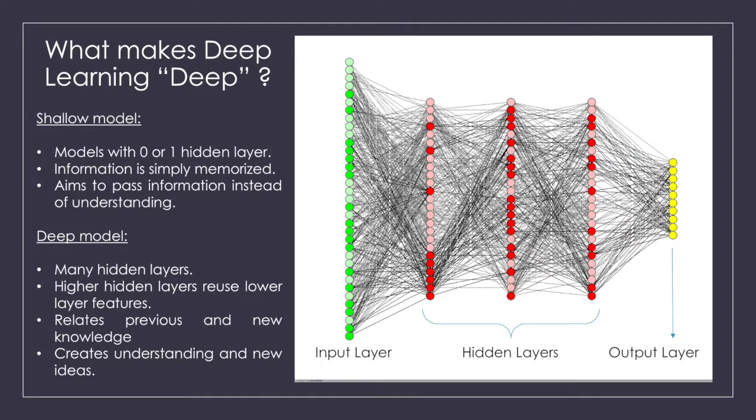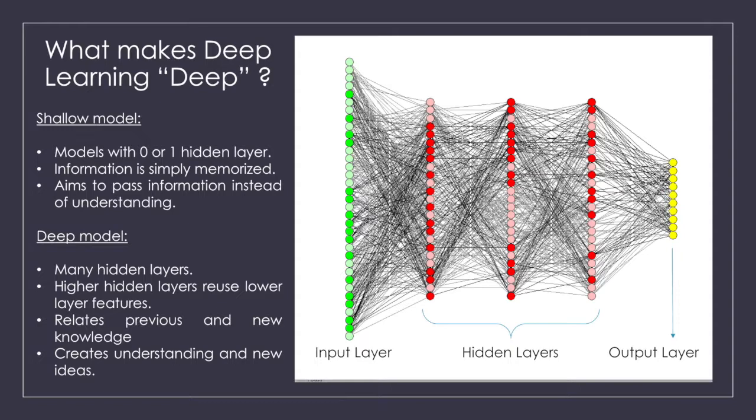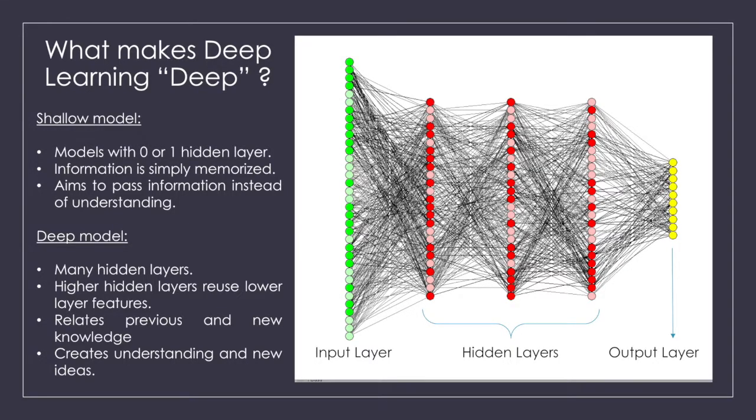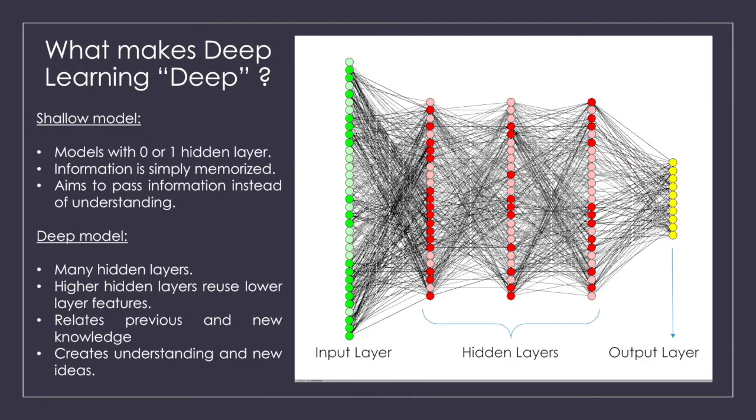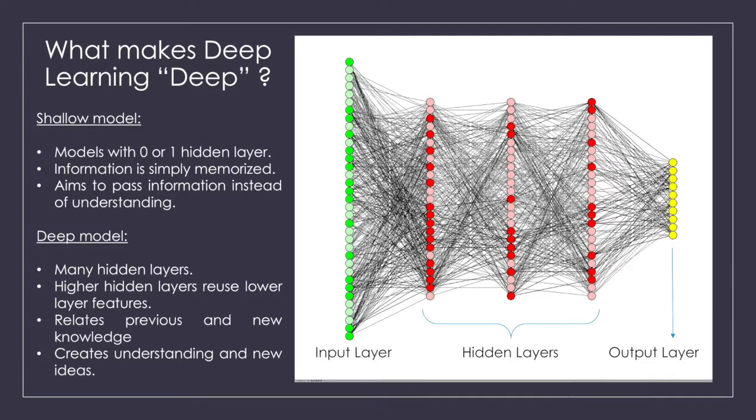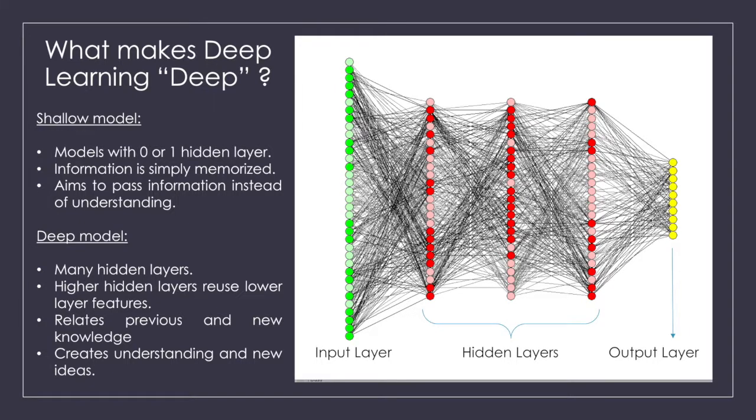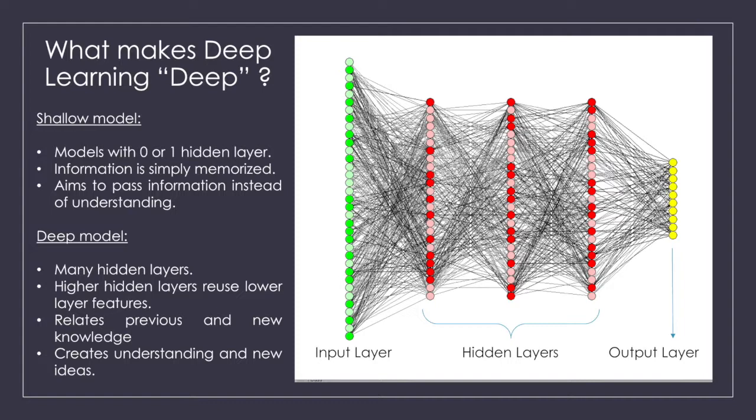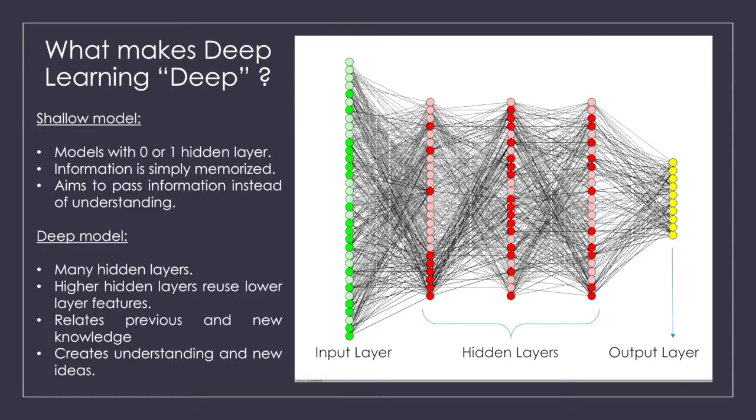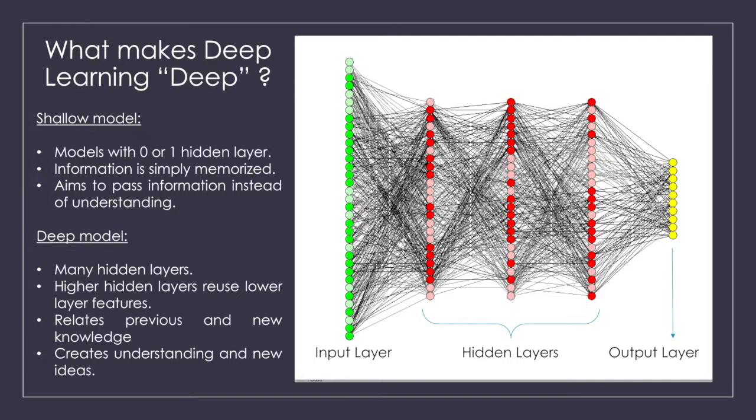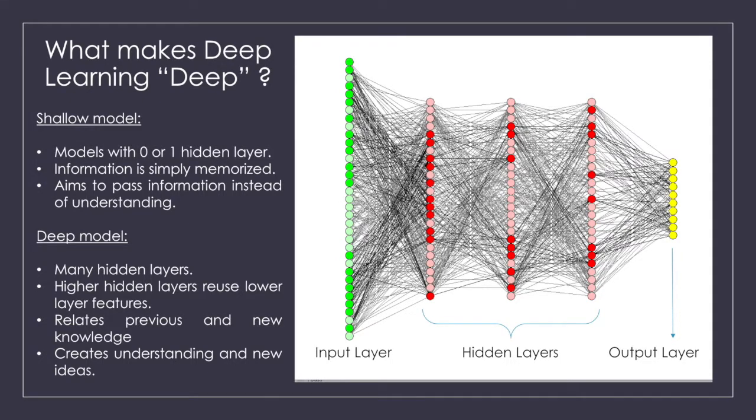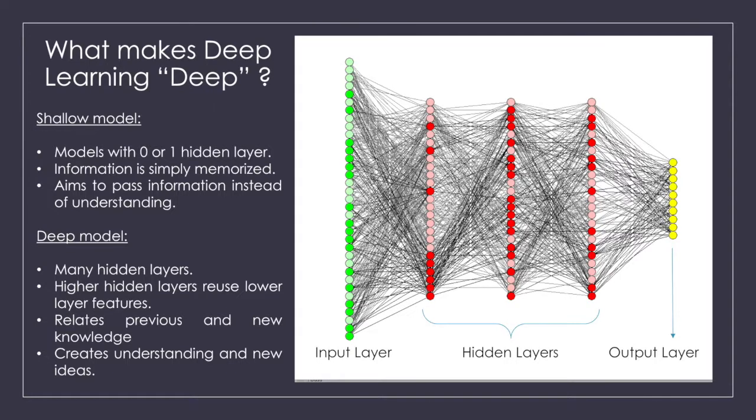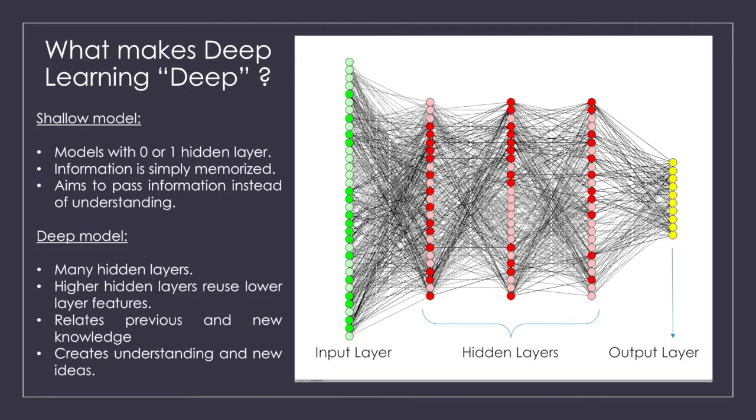However, in practice, a model with one hidden layer is very difficult to train when the problem is complex. We call models with zero or one hidden layer shallow model because of the limitation of problem domains that they can apply. With the increasing computer power, researchers could try to add more hidden layers to observe their impacts. To their surprise, models with more hidden layers perform much better for some very complex voice recognition and image classification problems. In deep network, multiple higher hidden layers can code reuse lower layer features.